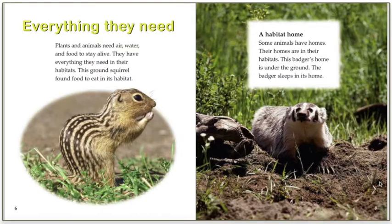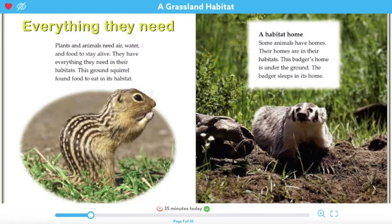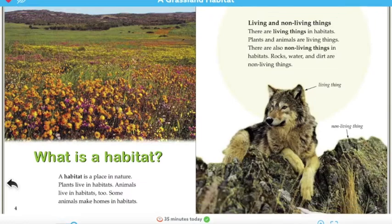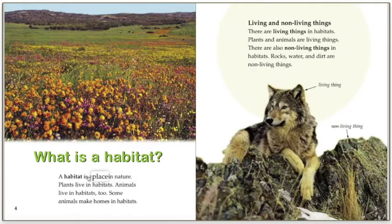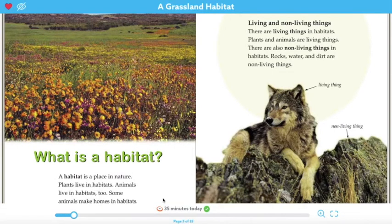I want you to take a moment and think about what a habitat is. Now let's go back and look at what the author tells us. We can go back in our book and reference this. It says a habitat is a place in nature, and plants live in habitats, and animals live in habitats too. So a habitat is a place in nature that animals and plants live.